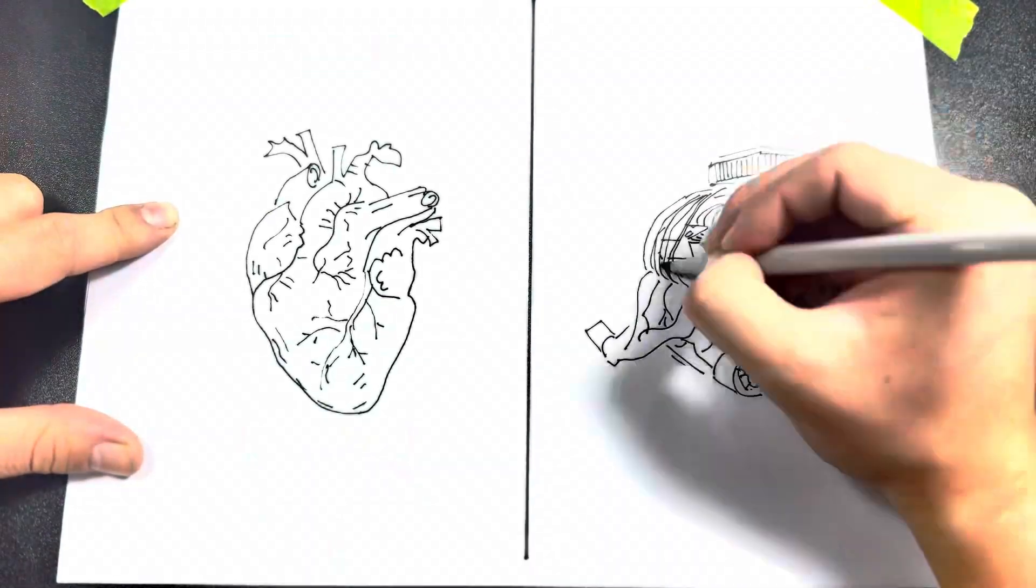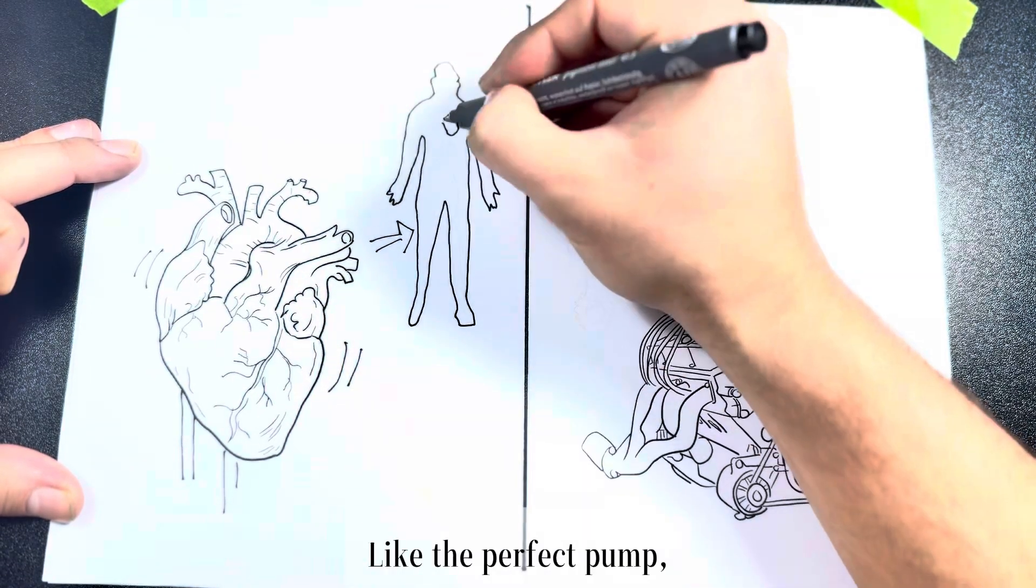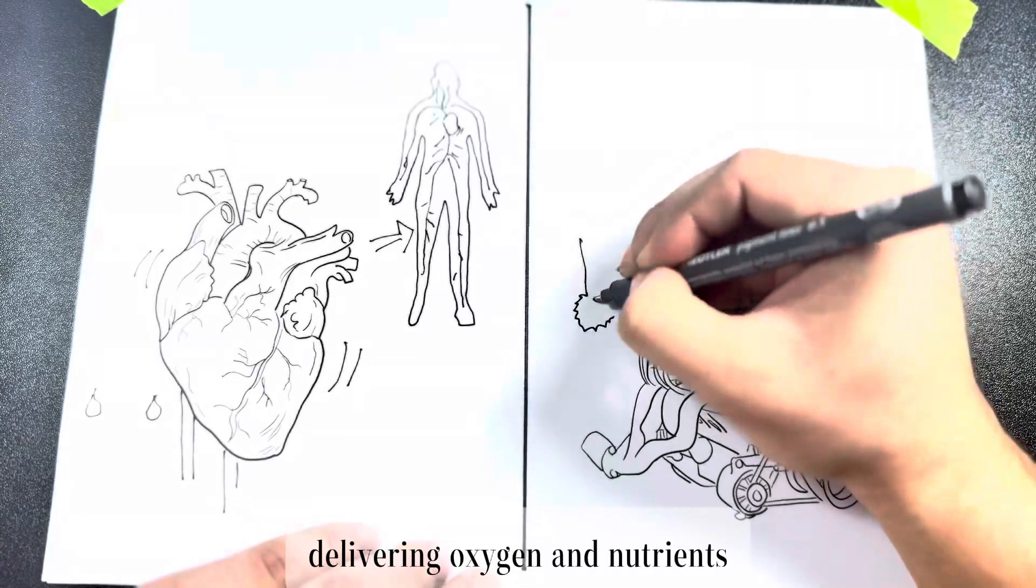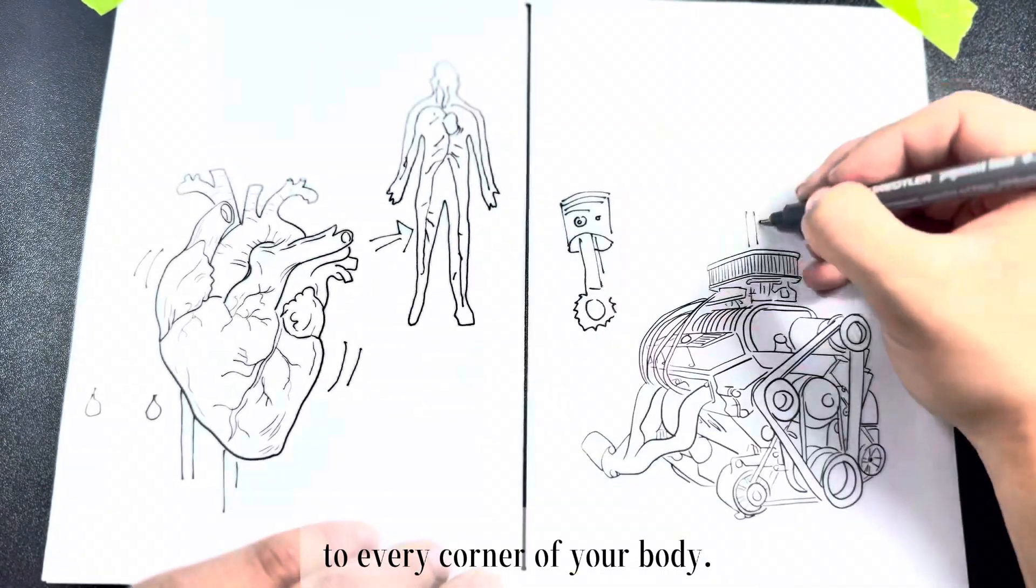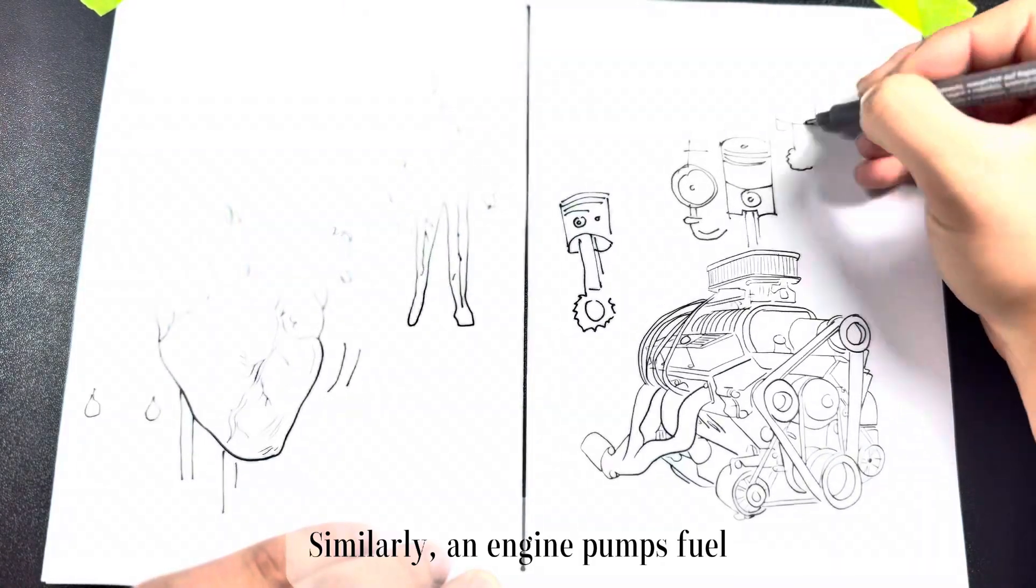Let's break it down. Pumping and circulation: The heart, like the perfect pump, circulates blood, delivering oxygen and nutrients to every corner of your body. The engine similarly pumps fuel and air through its cylinders to generate power. Without this circulation, both systems would fail to function.